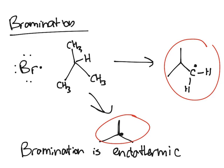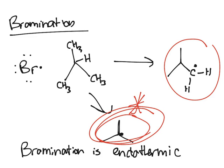The transition state for bromination more closely resembles the products. What you need to take from this is that bromination is more selective — when you use bromine versus chlorine, bromine will always go for the more substituted radical, about 99% tertiary. Chlorine is not as reliable; you'll get a mixture of products. If you found this video helpful, please like it and share it with your friends.